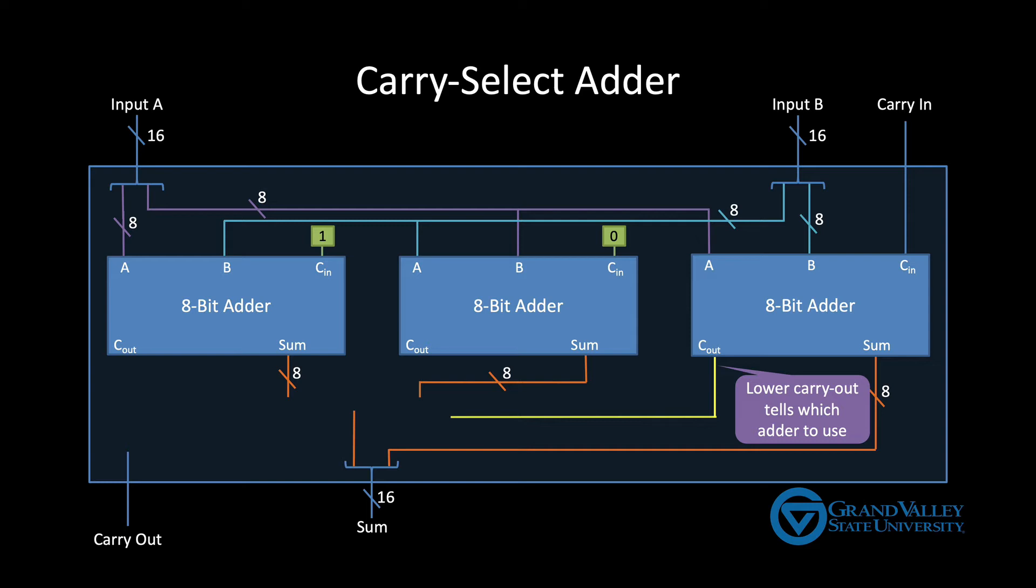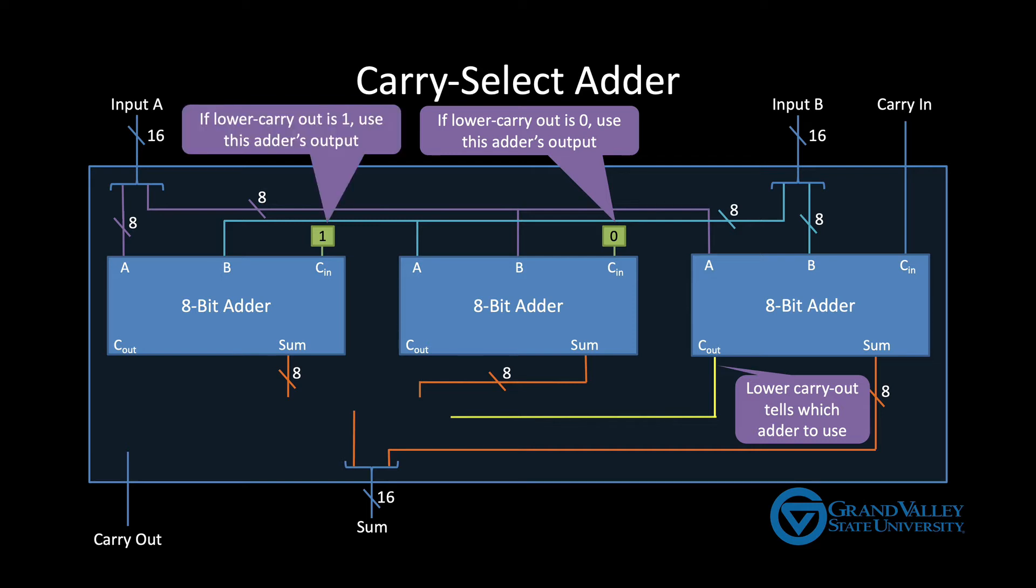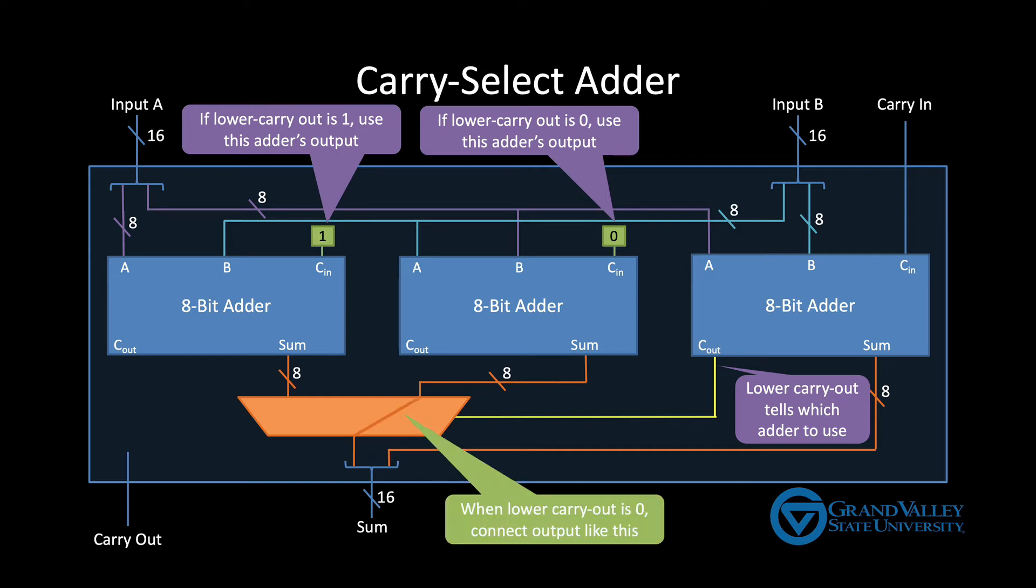The lower adders carry out tells us. If that carry out is a zero then we use the adder whose carry-in is a zero. If the lower adders carry out is a one then we use that leftmost adder whose carry-in is always one. Now we just need to figure out how to put it all together. We need a sub circuit that conceptually acts like a switch and connects the middle adder to the output when the carry out of the lower adder is zero and connects the left adder to the output when the carry out of the lower adder is a one. So let's see how to build this conceptual switch.